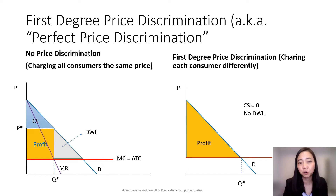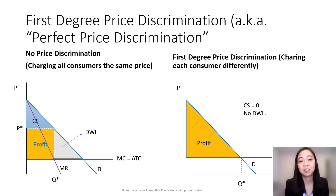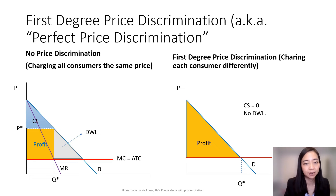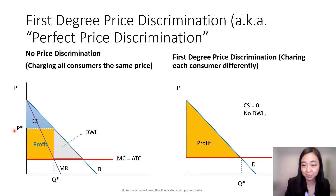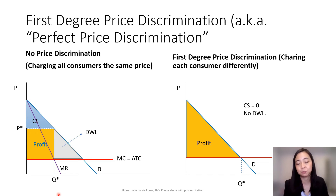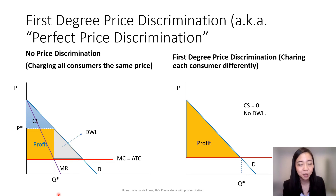We are going to first compare first degree price discrimination with a monopoly with no price discrimination. For simplicity, I am going to assume that there is no fixed cost and our marginal cost is constant — therefore, marginal cost is exactly equal to average total cost. The firm sets marginal revenue equal to marginal cost and produces quantity Q star. When deciding how much to charge, I go back to the demand curve and charge price P star to every consumer. Consumer surplus is the area below the demand curve and above P star — that blue triangle — and the firm's profit is price minus average total cost times quantity, which is the yellow block.